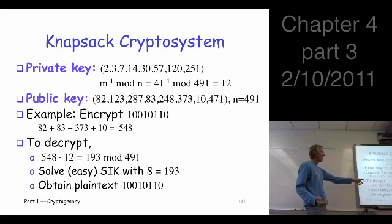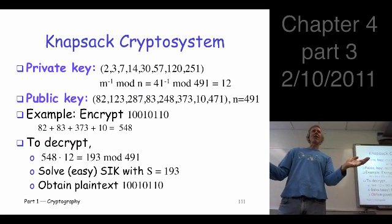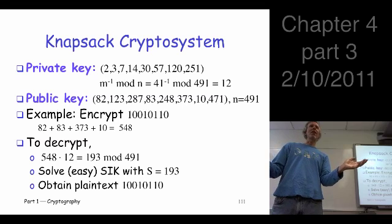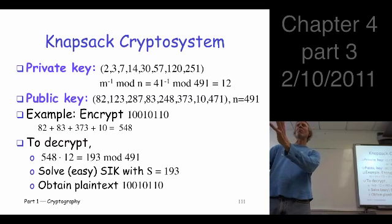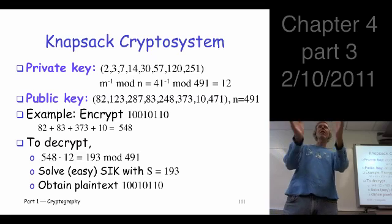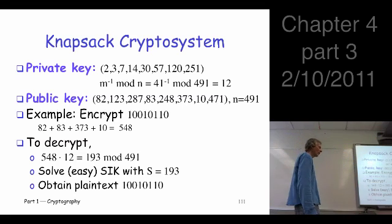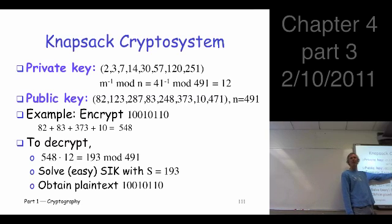Now how do we encrypt? Well, since there's eight elements in the public key, you chop your data up. Everything's bits, right? Everything you want to encrypt is bits. Everything in the world is bits. So treat your data as bits. Chop it up, since there's eight elements in the knapsack, chop it up into chunks of eight consecutive bits, encrypt each independently.